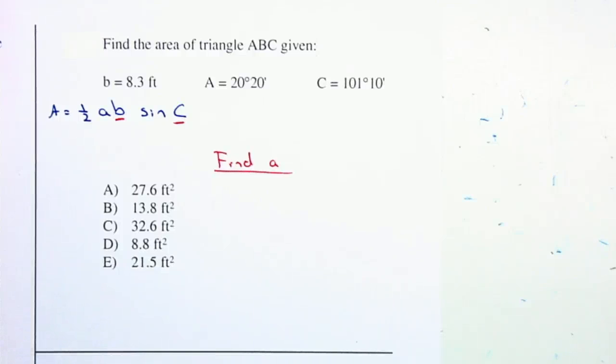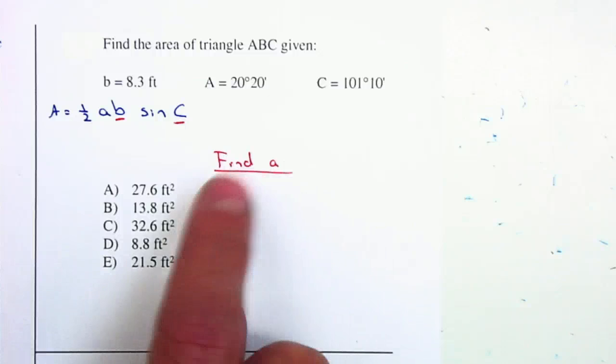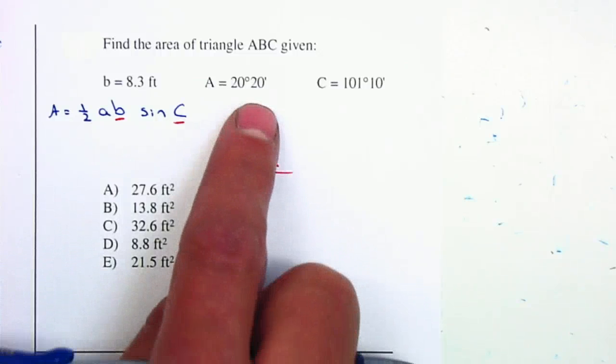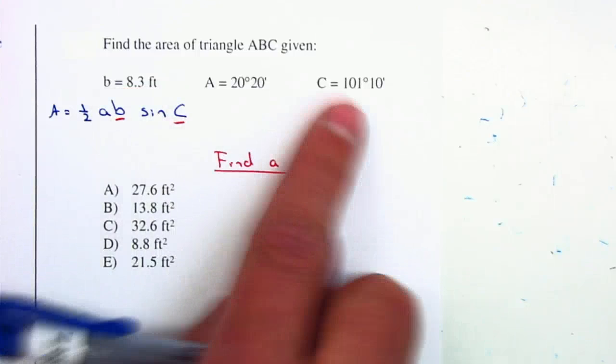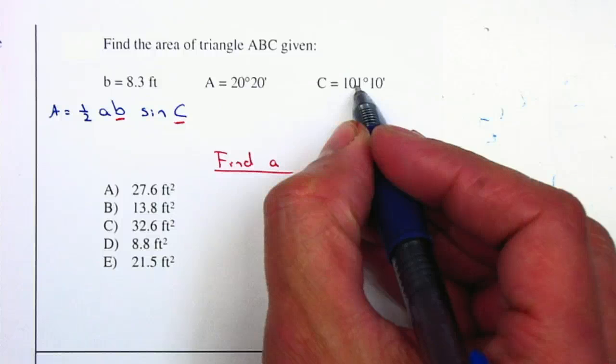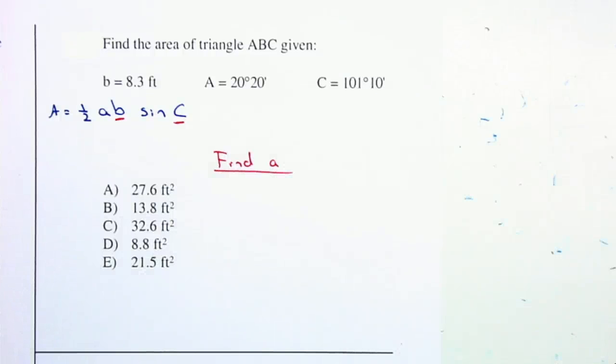In order to find side A, we're going to use the law of sines to find your missing side. I need angle B to be able to do so, and I know that all three angles equal 180, so let me subtract.